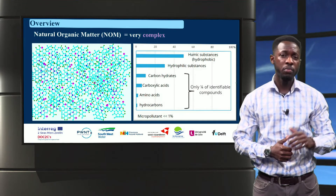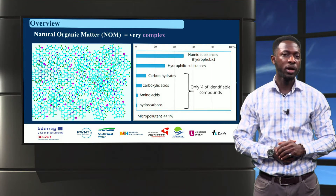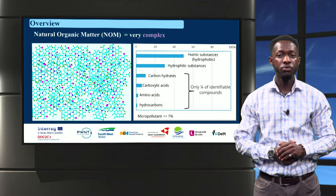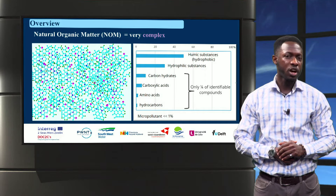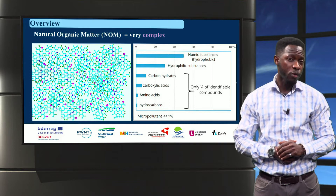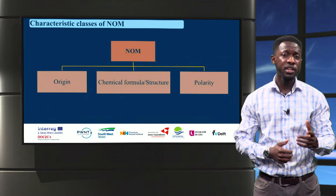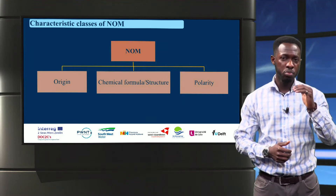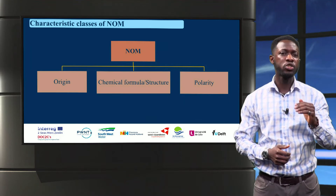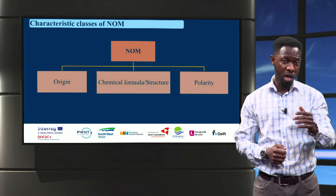NOM, as can be seen from this simplified image, is a very complex mixture of different organic compounds that are present in the environment — fresh water in our case. It consists of several functional groups and compounds, only a few of which are identifiable. Therefore, to be able to study this complex structure, we need to break it down into broad classes based on origin, chemical formula or structure, and polarity.